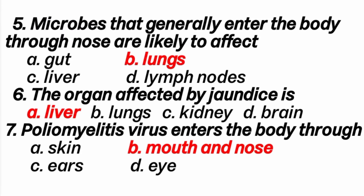5th question: Microbes that generally enter the body through nose are likely to affect. Answer is: throat and lungs. The organ affected by jaundice, answer is liver.